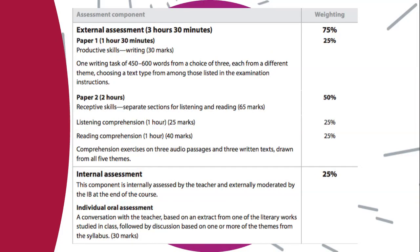The external exam is three hours and thirty minutes. Paper 1 is an hour and thirty minutes — you'll make a choice from three options, each from a different theme, and choose a text type from among those listed in the examination instructions. So you might write an email, a letter, a set of instructions — it all depends. This is where we'll go over the different types of writing, the different templates you can use, and you'll be practicing them throughout the course.